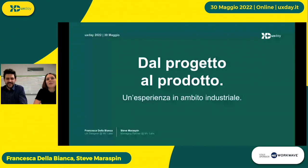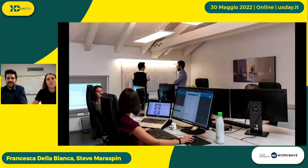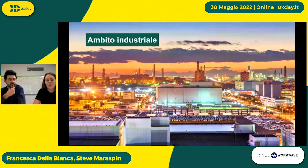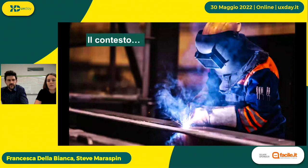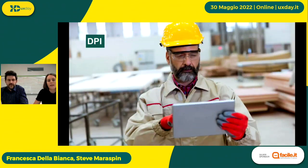Steve e io siamo abituati a lavorare qui, ma oggi parleremo di un ambiente un po' diverso: l'ambiente industriale. Questo è un contesto dove noi in MV Labs lavoriamo molto spesso ed è un settore molto complesso. Per progettare in quest'ambito, dobbiamo analizzare a fondo e capire quali sono le caratteristiche degli utenti che lavorano in quest'ambito e come si relazionano con esso. La maggior parte delle persone indossa attrezzature molto ingombranti, come visiere, caschetti, occhiali di protezione, tute e guanti, che possono limitare e rendere molto complessa l'interazione con oggetti terzi nello svolgimento delle loro mansioni.